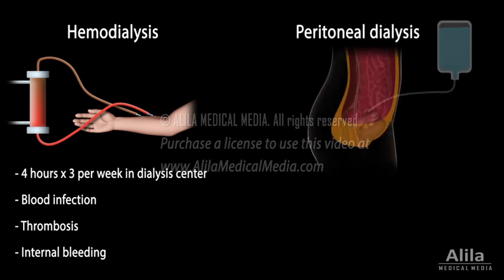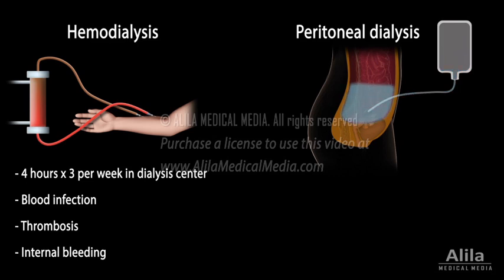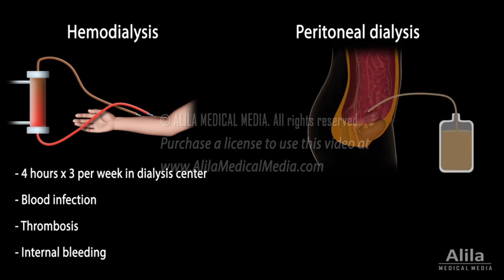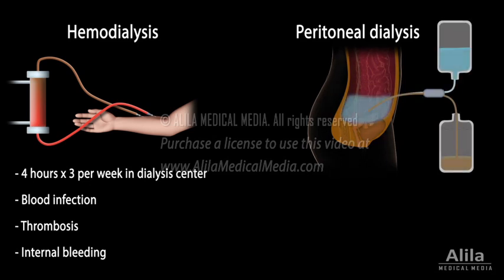In peritoneal dialysis, the dialysis fluid is introduced into the patient's abdominal cavity via a catheter. The lining of the abdomen, the peritoneum, serves as the natural filtering membrane. The fluid remains in the body for several hours, allowing exchange and equilibrium with the blood running in the underlying vessels, before being discarded. The therapy can also be done automatically at night, during sleep.